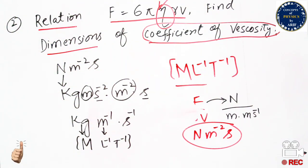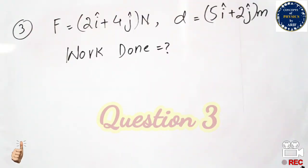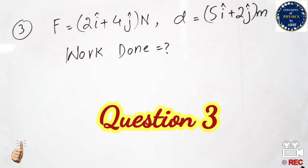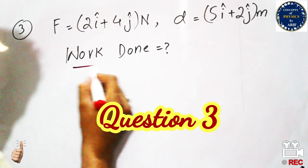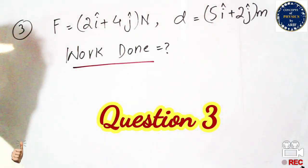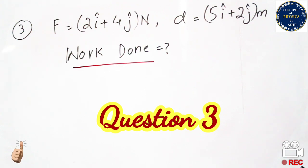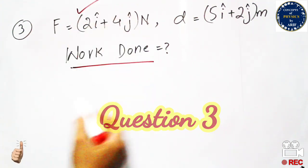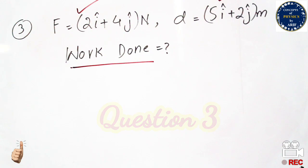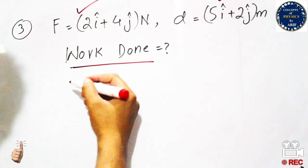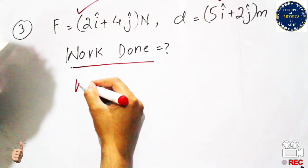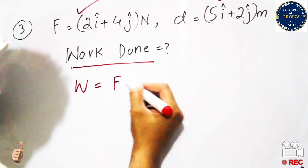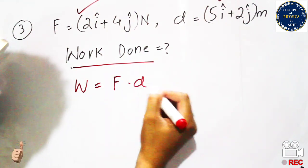The next question requires calculating work done, given force and displacement both expressed in terms of i and j components. The formula for work done is the dot product of force and displacement, as both are vector quantities.